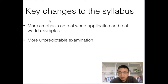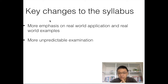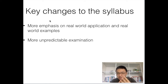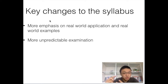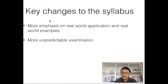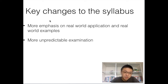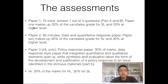The exam is also more unpredictable. In the old syllabus, Paper 1 was only about micro and macro, Paper 2 was about international trade and development, and Paper 3 was calculation. That meant you wouldn't face micro and macro questions in Paper 2, and you wouldn't face development and trade questions in Paper 1. The old syllabus was more predictable, but now the exam has changed and they've made it more unpredictable.